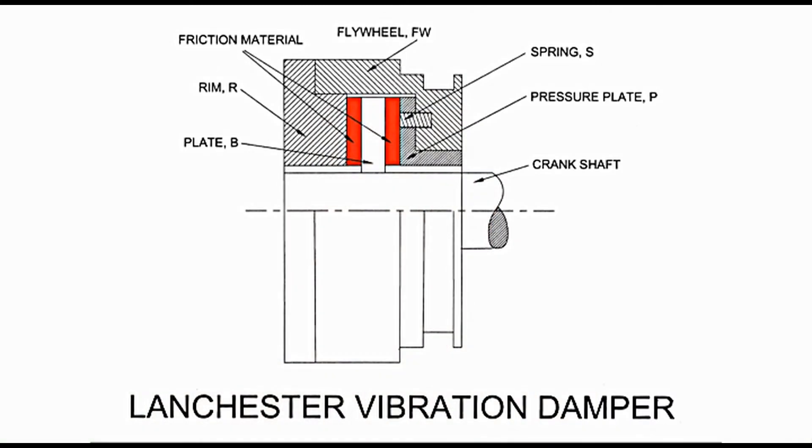Vibration dampers help in reducing torsional vibrations. There are a large number of variants of vibration dampers available. Here, I intend to talk about three variants. The first is the Lanchester vibration damper. It dampens vibrations due to winding and unwinding of the shaft along with torsional vibrations. Referring to the diagram, the view has the upper half in section to show the inner details. Plate B is mounted on the crankshaft, which experiences torsional vibrations and vibrations due to winding and unwinding.